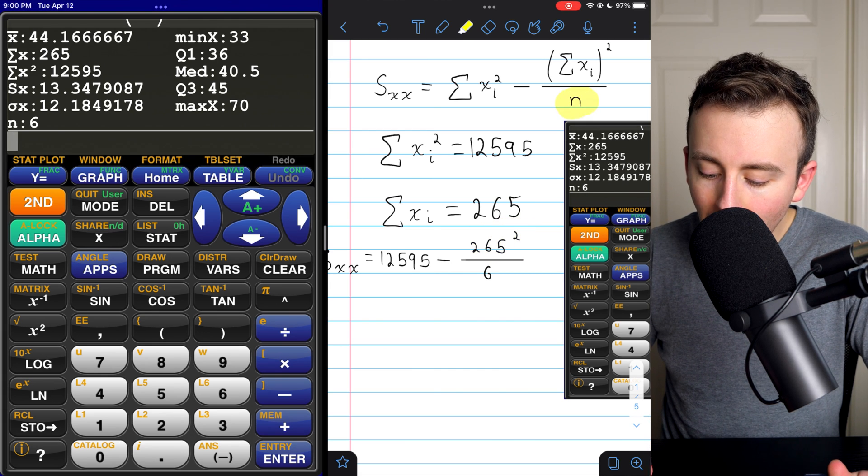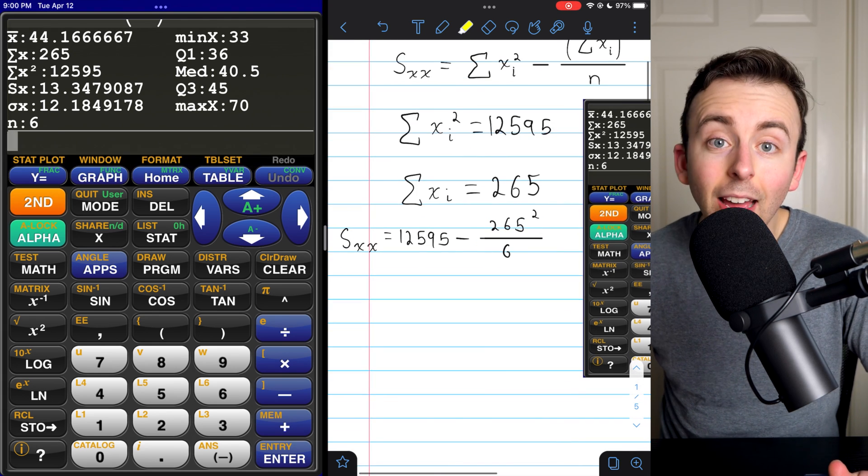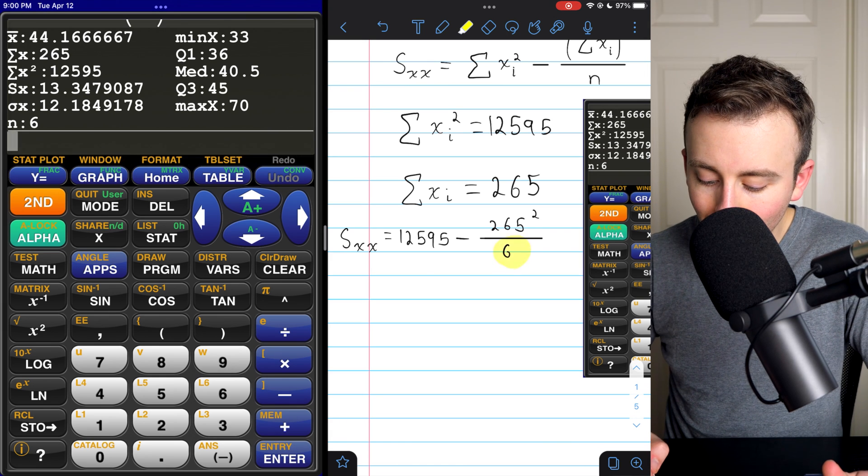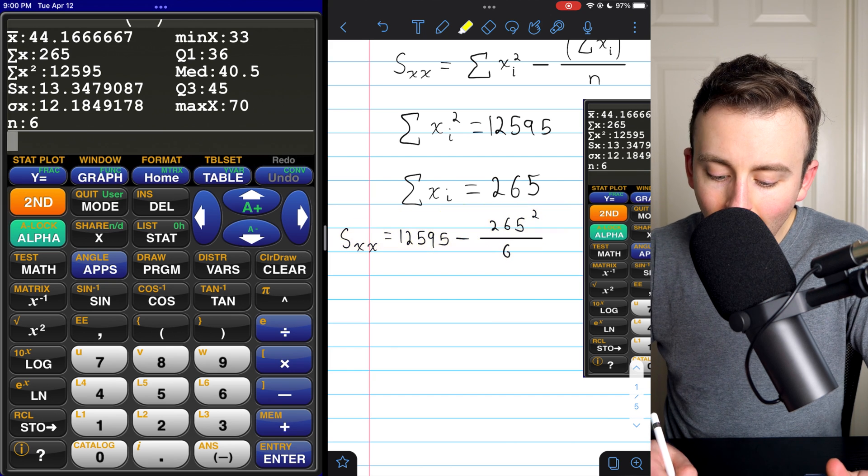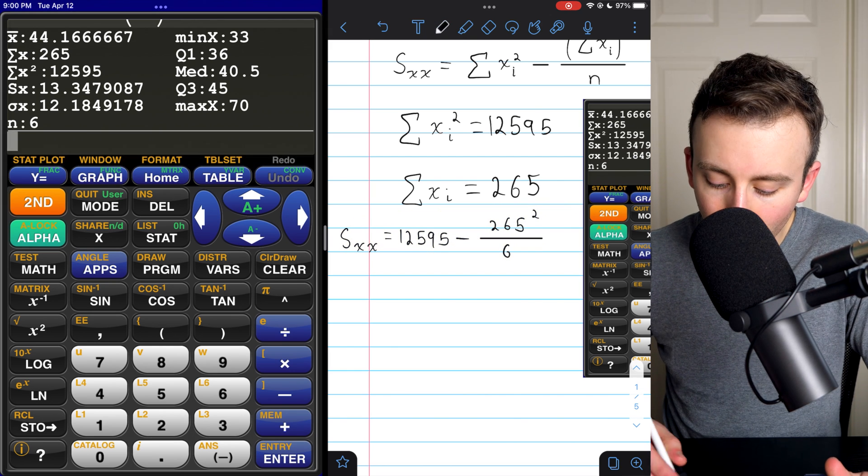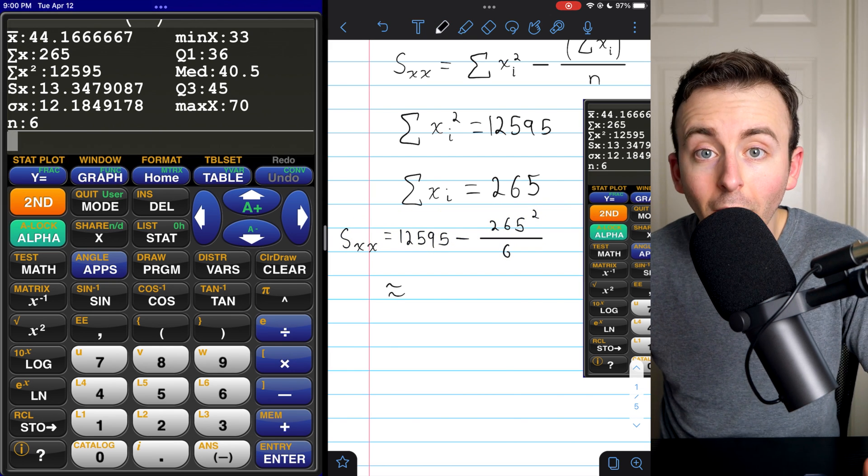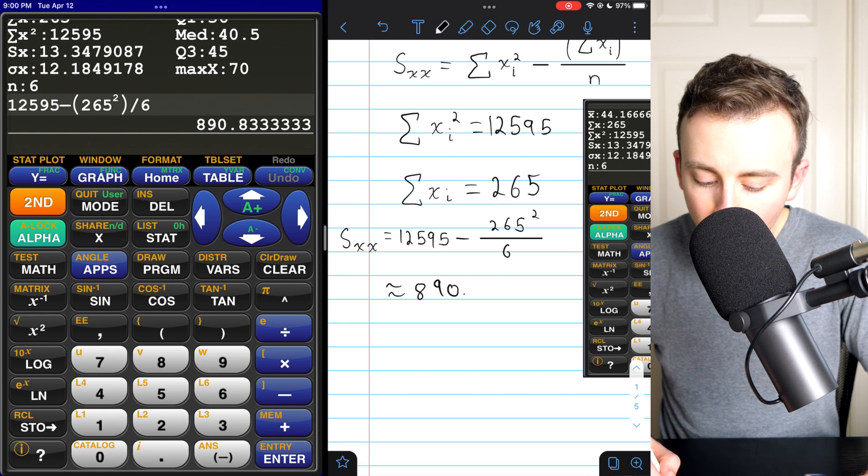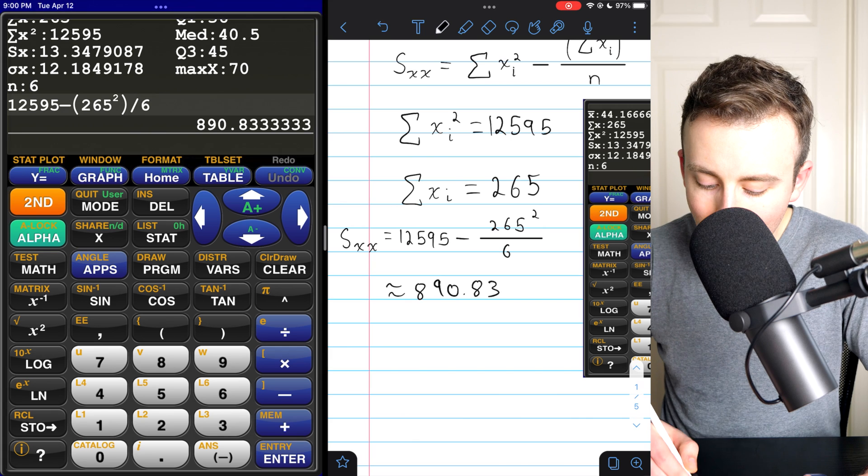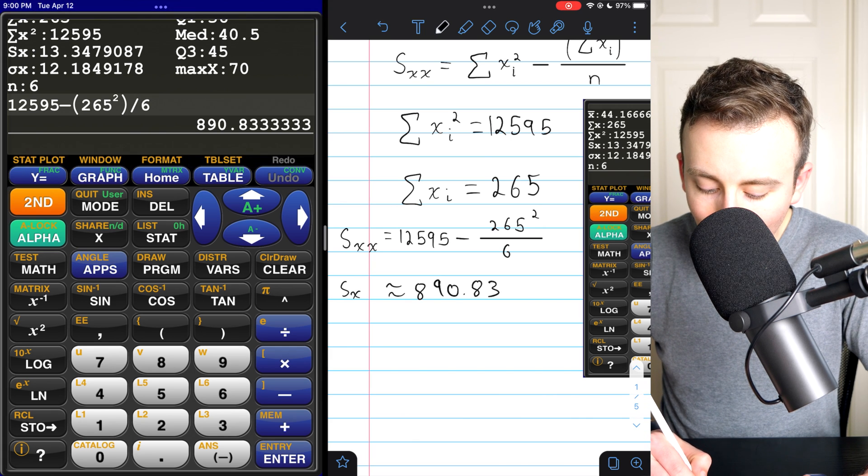And then you just need to divide by N, which is the number of data values that we've got. And in this case, that's six. And so there it is. This is SXX. I've just got to plug it into my calculator in order to get the decimal approximation. When I plug this into my calculator, I get about 890.83. And so that is SXX.